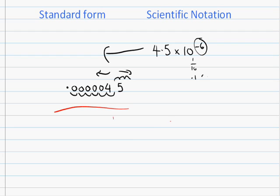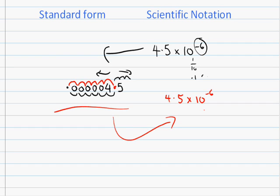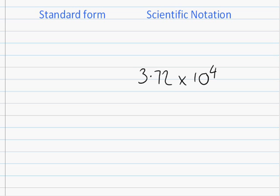Now if you want to change that small decimal number back into scientific notation, you start with the decimal place here and want to get it to just after the first digit. You count how many times you move it: 1, 2, 3, 4, 5, 6. So it would be 4.5 times 10 to the negative 6. A lot of people get occasionally confused about which way to move the decimal place — that's all well and good right now, but give it a few weeks and it can get confusing.